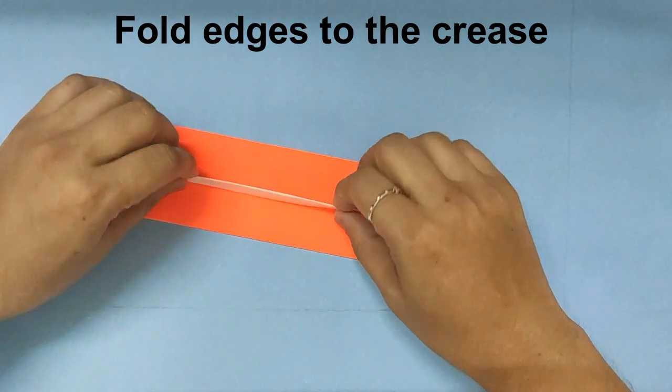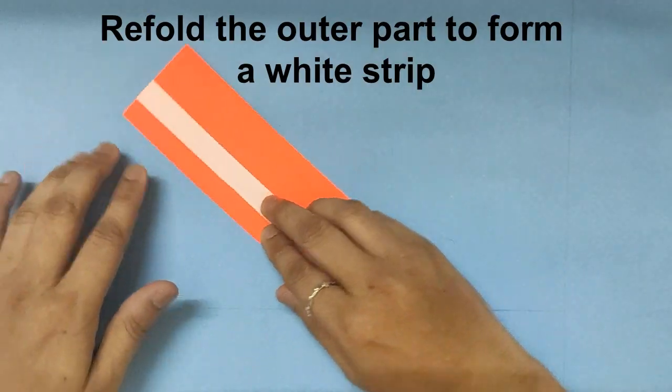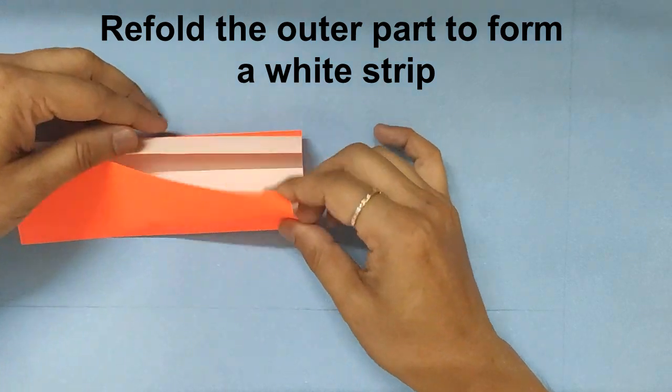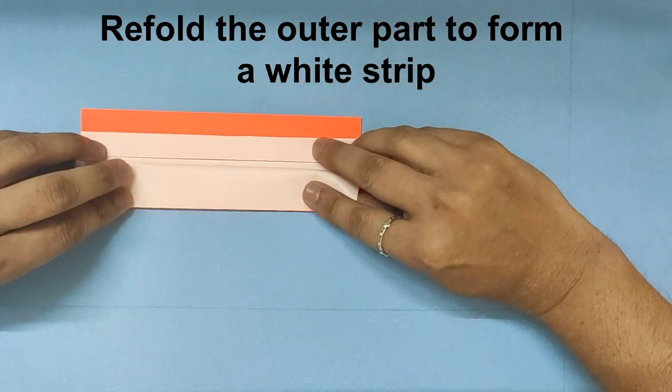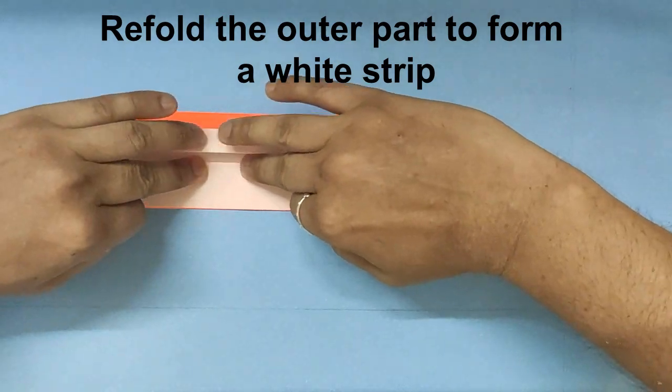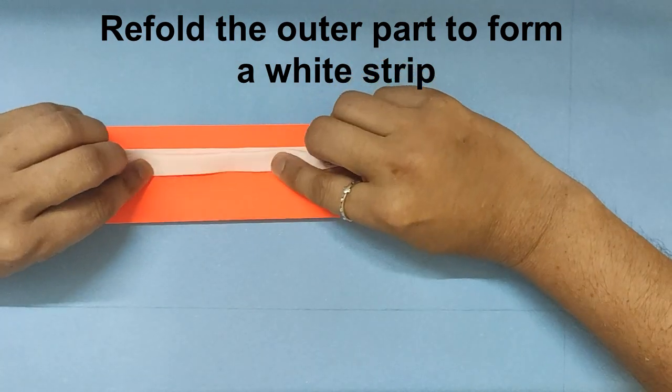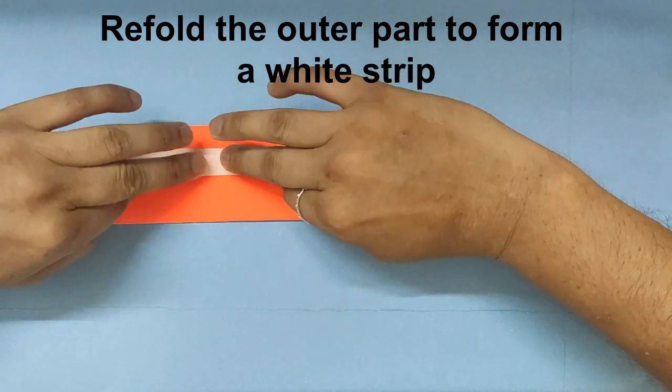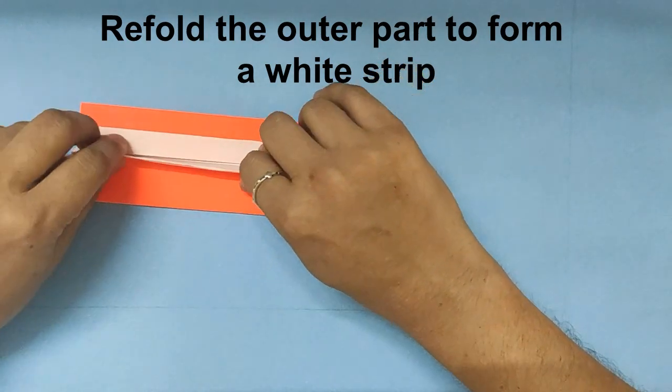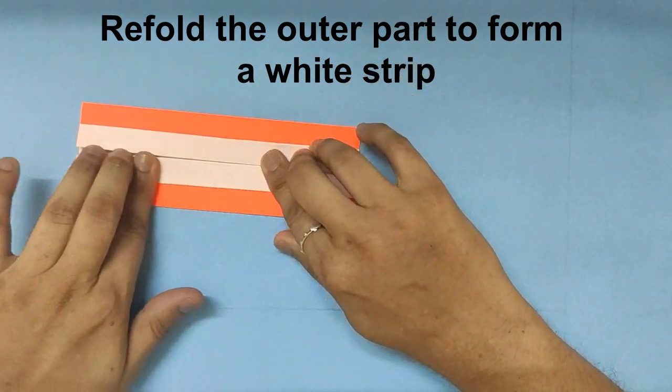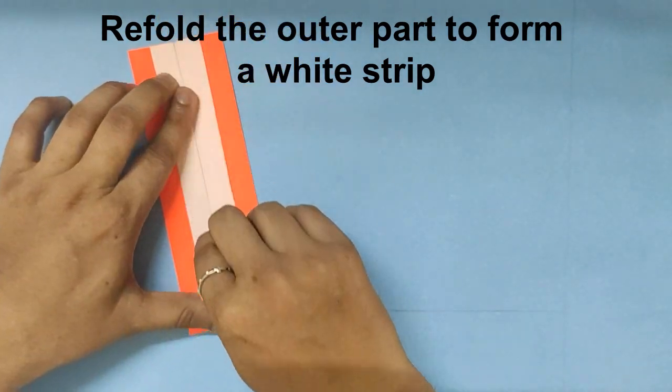And then flip this over. Refold the same thing on the other side. Half, open up to the crease. Make sure you press the folds well. This will give a neat finish.